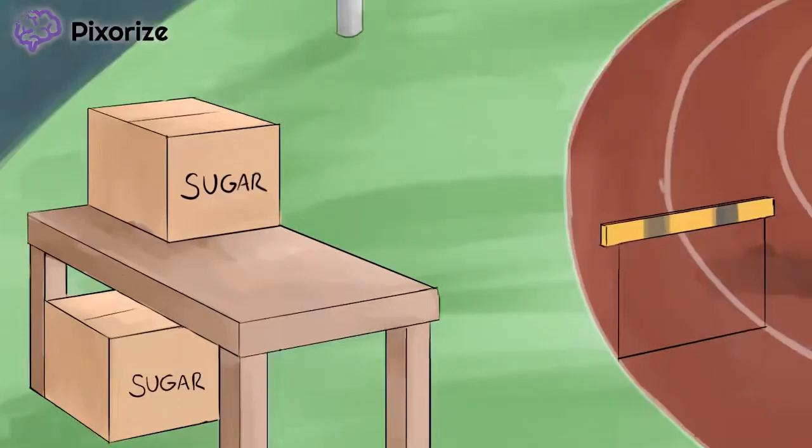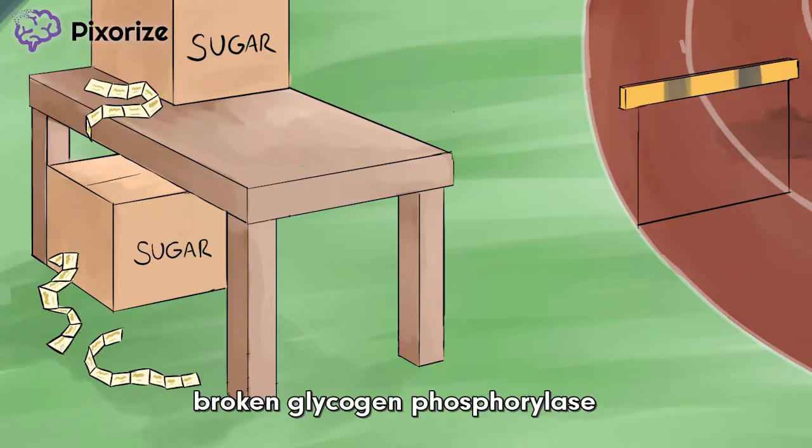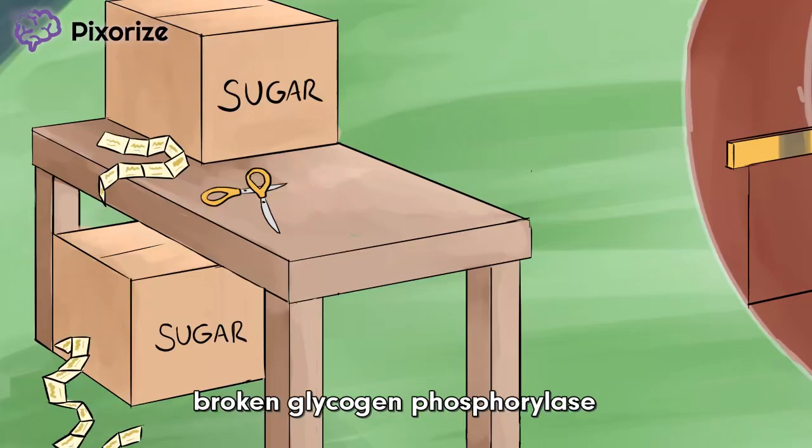Check out these packets of sugar from these boxes. These packets of sugar are in long strips because they haven't been pre-cut into individual packets, and instead require the hurdlers to cut each packet using scissors. But there's a problem here — the scissors needed to cut the sugar packets off one by one are now broken. McArdle disease results from a defect in glycogen phosphorylase, also called myophosphorylase, in skeletal muscle, which normally functions to remove glucose residues one at a time from glycogen, just like these scissors.